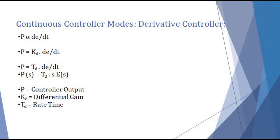In this case, the constant is going to be KD. KD stands for differential gain. Now, there is a relation between KD and TD, which is the rate time. The relation is KD equals to TD. So we can substitute the value of KD as TD in the next step, giving us P equals to TD into dE/dt. Applying Laplace transform, we can write P(S) equals to TD into S·E(S). This is the final expression for the controller output of a derivative controller.